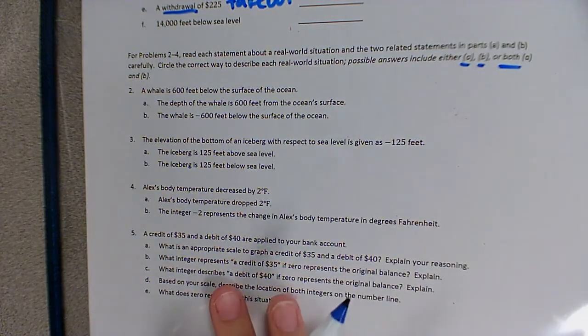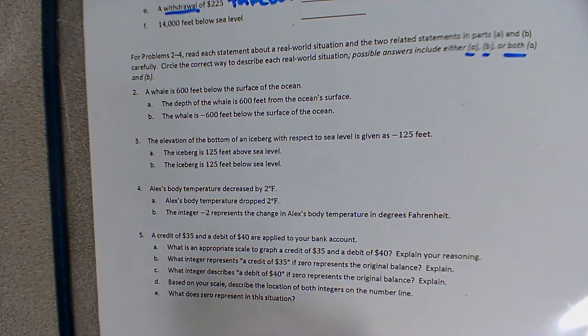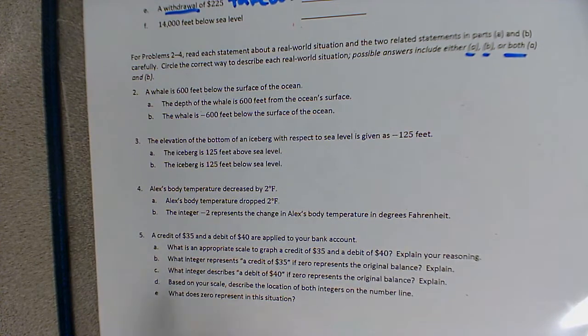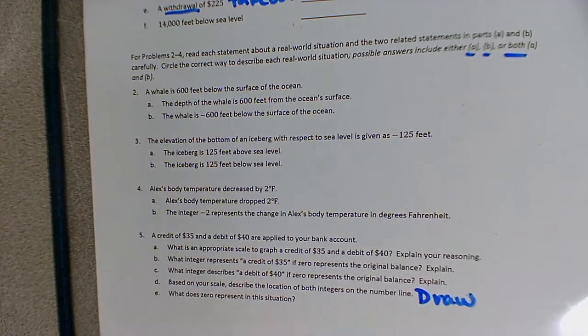And finally, number five, it says a credit of $35 and a debit of $40 are applied to your bank account. So you'll graph, you'll have to think about what's an appropriate way to graph a credit of 35 and a debit of 40. What integer would represent a credit of 40? What integer describes a debit of 40, or sorry, a credit of 35 and describes a debit of 40? Based on your scale, describe the location of both integers on the number line. You can draw this if you want to. And what does zero represent in this situation?